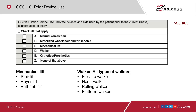Definitions are provided for a mechanical lift — any device a patient or caregiver requires for lifting or supporting the patient's body weight, including a stair lift, Hoyer lift, or bathtub lift. All types of walkers are included: pickup walker, hemi walker, rolling walker, or platform walker. Check Z, none of the above, if the patient did not use any listed devices prior to the current illness, exacerbation, or injury. A dash is valid but expected to be a rare occurrence.